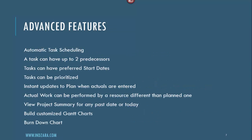In addition to these basic features, there are some advanced features. Automatic task scheduling is huge — once you provide the basic information about the tasks, the template automatically schedules them, which is a major time saver for any project manager or planner. A task can have up to two predecessors, which handles dependent tasks. Tasks can also have preferred start dates, meaning you can control when a task begins — if you don't want a task to start before a specific date, you provide that input and the template will not schedule it before that date. Tasks can also be prioritized: if two tasks are assigned to the same person, you can control which one they work on first.